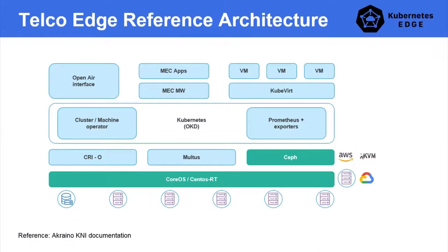You can also refer to the MEC reference architecture provided by ETSI, which nicely explains the role of each component. Many companies follow that recommended architecture. Nowadays, various vendors have also started providing their own edge reference architectures — AWS has published one, VMware has published one — but more or less the components will be similar to what was described.